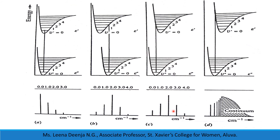And for 3,0 and 4,0 transitions, the intensity will also be gradually decreasing compared to the 2,0 transition. In figure D, we can see that the upper electronic energy level's equilibrium internuclear distance is much greater than that of the lower electronic energy level. According to the Franck-Condon principle, during the transition there is no change in internuclear distance, so it will reach a point which is above the dissociation limit in the higher electronic energy level. The molecule will dissociate without any vibration, and the atoms formed by this dissociation may take up the extra energy as kinetic energy. The transitions are not quantized, so we get a continuous spectrum.